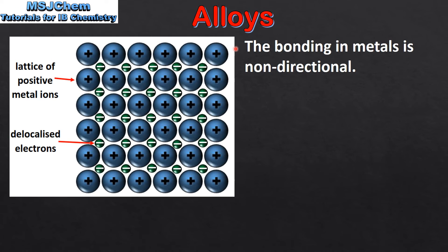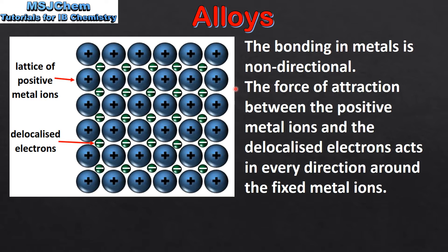The bonding in metals is non-directional. The force of attraction between the positive metal ions and the delocalized electrons acts in every direction around the fixed metal ions. In this diagram we can see the lattice of positive metal ions and the sea of delocalized electrons. The force of attraction occurs all around the positive metal ions. This is known as non-directional bonding.